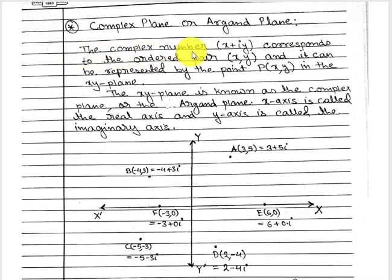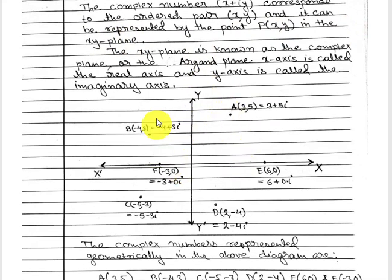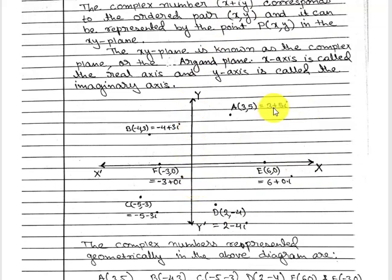Suppose I have a complex number x plus iy. This is nothing but an ordered pair x comma y. It can be represented by the point P(x, y) in the XY plane. We have the XY coordinate system, so if I want to represent x plus iy geometrically, I can represent the real part on the x-axis and the imaginary part on the y-axis. For example, if I have 3 plus 5i, in the XY plane I can denote it as point A(3, 5).